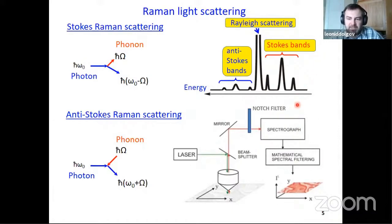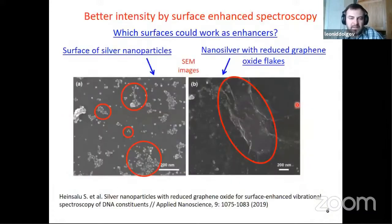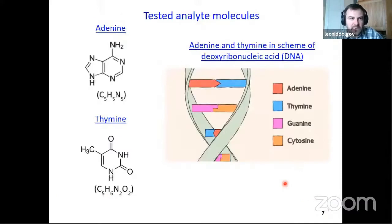And in principle, it's possible to collect Raman scattering from the sample by microscope objective, and then using some holographic notch filter separated from the Rayleigh scattering. But here you see that Rayleigh scattering is usually very, very much more intensive than Raman one. And there are some efforts directed on increased intensity of Raman scattering. And this direction is named so-called surface-enhanced Raman scattering. And in our work we used surfaces of silver nanoparticles and surface of reduced graphene oxide flakes for enhancing signal. And as tested molecules, we used organic adenine and thymine molecules, which are biologically important molecules, because they are constituents of DNA.